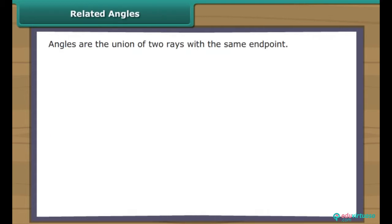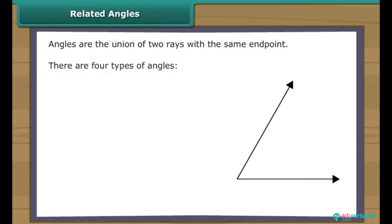An angle is defined as the union of two rays that have the same end point. The sides of the angles are the two rays, while the vertex is the common end point. There are four types of angles.